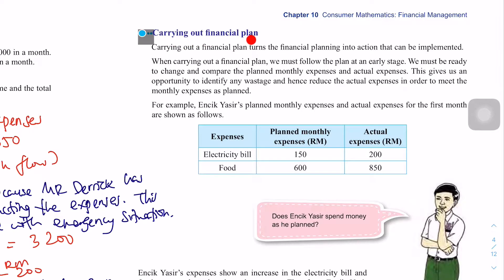Carrying out financial plan. Carrying out a financial plan turns the financial planning into action that can be implemented. When carrying out a financial plan, we must follow the plan at an early stage. We must be ready to change and compare the plan's monthly expenses and actual expenses. This gives us an opportunity to identify at an early stage and hence reduce the actual expenses in order to meet the monthly expenses as planned. For example, Cik Yaseh's planned monthly expenses and actual expenses for the first month are shown as follows.